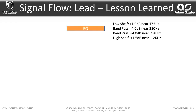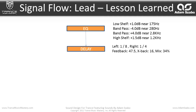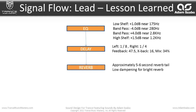For the effects, the first is an EQ with a low shelf plus 1 dB near 175 Hz, then a bandpass minus 4 dB near 280 Hz, another bandpass plus 4 dB near 2.8 kHz, and a high shelf plus 1.5 dB near 1.2 kHz. The delay uses left 1/8th and right 1/4 with feedback at 47.5 and a little cross back set to 16, mix at 34%. Then that flows into a reverb with approximately a five to six second reverb tail — one of the longest we've looked at in the course — with low dampening for a bright reverb sound. Then it flows into the main output.